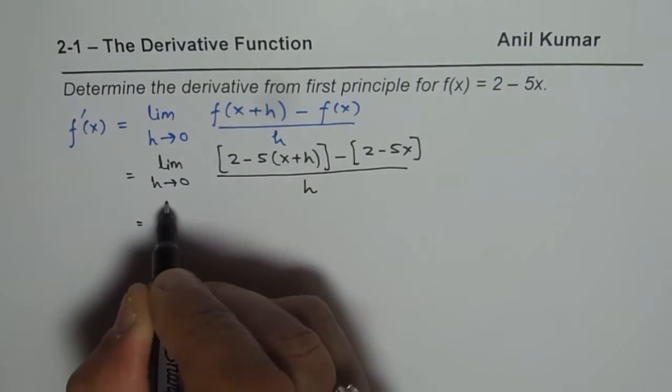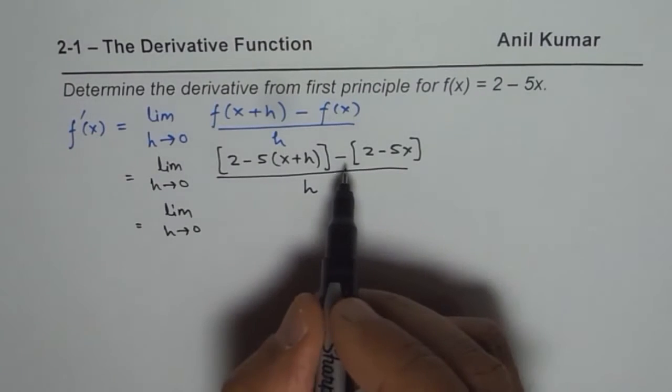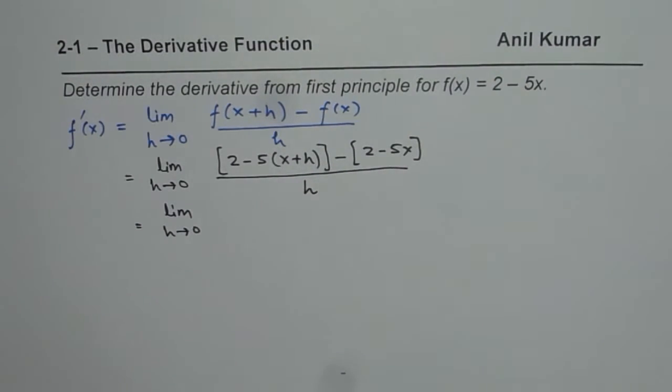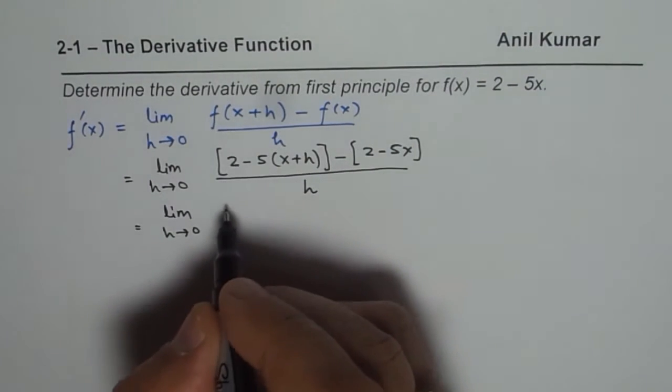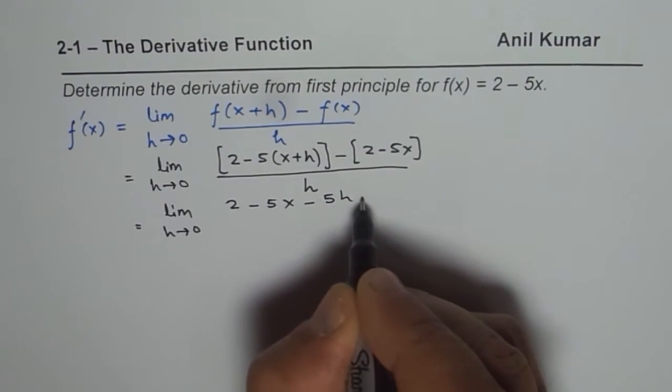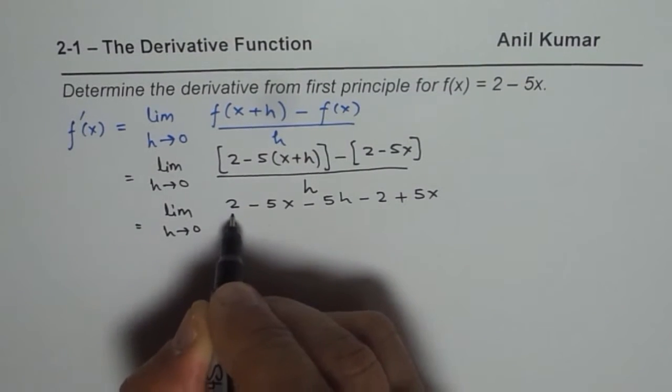Now we need to open the bracket and simplify. So when you open the bracket, 2 minus 2 is 0. Let me open the bracket and then we will do it. So we get 2 minus 5x minus 5h minus 2 plus 5x over h.